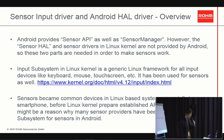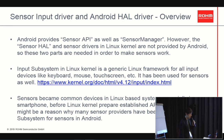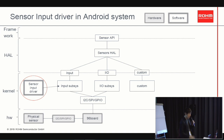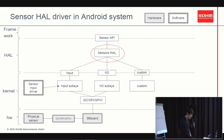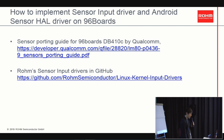I think sensors became common devices in Linux-based systems, especially in smartphones and tablets, before the Linux kernel established dedicated APIs for sensors. That may be a reason why many sensor providers like us have been using input subsystems for sensors in Android. Sensor input drivers should be implemented in the Linux kernel. Sensor hub is located between the Android framework and the Linux kernel. A sensor porting guide for 96Boards with Android is available in the Qualcomm developer site, and our sensor input driver is also available on our GitHub site.